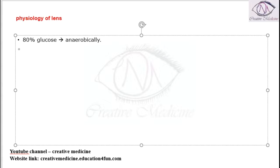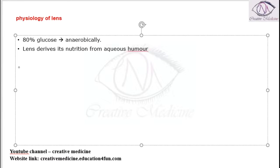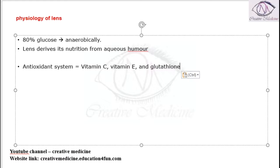The lens derives its nutrition from the aqueous humor. The lens also has an antioxidant system, which includes vitamins like Vitamin C, Vitamin E, and glutathione, which function as antioxidants of the lens.